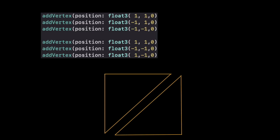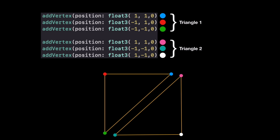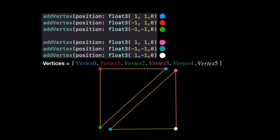Currently in our engine we have the ability to draw a quad, and a quad is represented by two separate triangles. The way we add these triangles is by calling a function 'add vertex' — in our case we call it six different times. When we add three vertices, the GPU creates a triangle. Then we add a pink, aqua, and white vertex and the GPU creates another triangle. So it's just a vertex array with vertices zero through five.